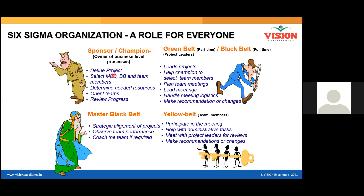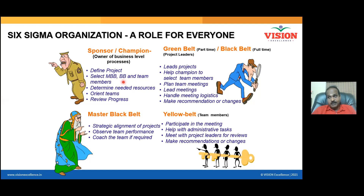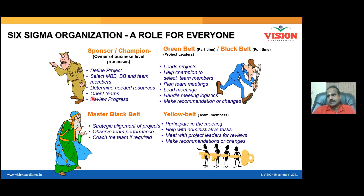The sponsor and champion define the project; they select the Master Black Belt, Black Belt, and team members because it is the sponsor and champion who are providing the resources. They determine the resource requirements to orient the teams, and the project team will be involved to complete documentation and other things. The champion and sponsor should compulsorily participate in review meetings — that is very important.